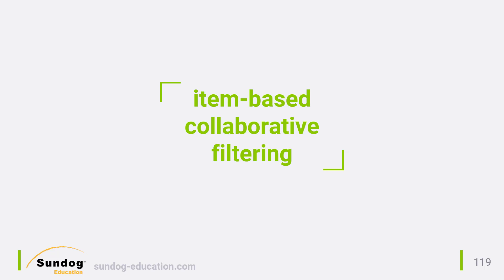Another way to do collaborative filtering is by flipping the problem on its head. Instead of looking for other people similar to you and recommending stuff they liked, look at the things you liked and recommend stuff that's similar to those things. We call this item-based collaborative filtering instead of user-based.